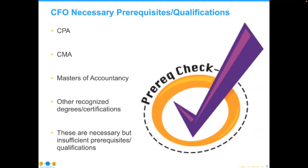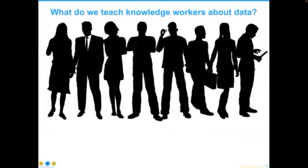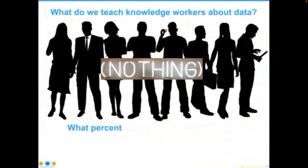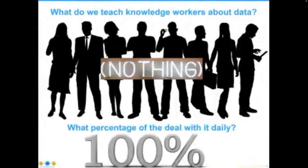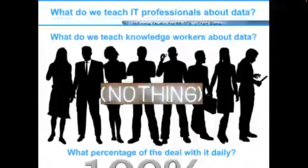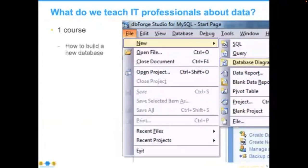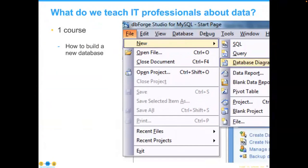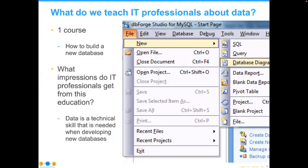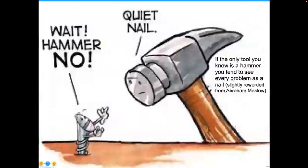In IT, it's been very different. We start with knowledge workers — what do we teach them about data? In general, absolutely nothing. And what percentage of them need it? That would be 100%. What we teach IT professionals about data is even more shameful: we give them one course on how to build a brand new database — yet if there is one skill we need less of, it is how to build a new database. We give them no concept of data as an organizational resource. Following Maslow's adage, if the only tool you know is a hammer, you see every problem as a nail — so we shouldn't be surprised when we've tried to solve every data problem by creating more databases.